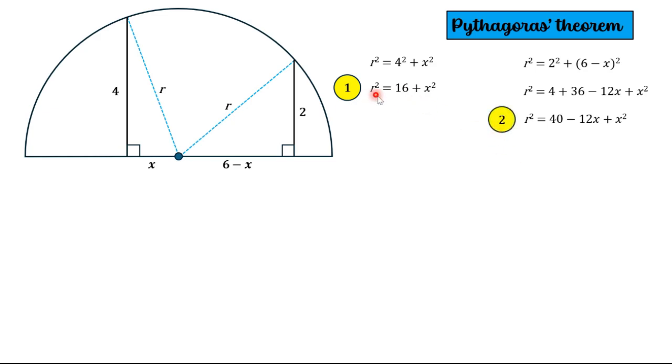Now looking at these two equations, they're actually both in terms of r squared, so we can substitute equation 1 into equation 2. So instead of r squared, we would have 16 plus x squared, which would go over here.